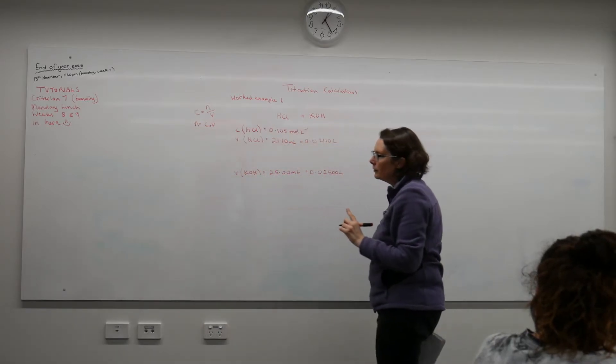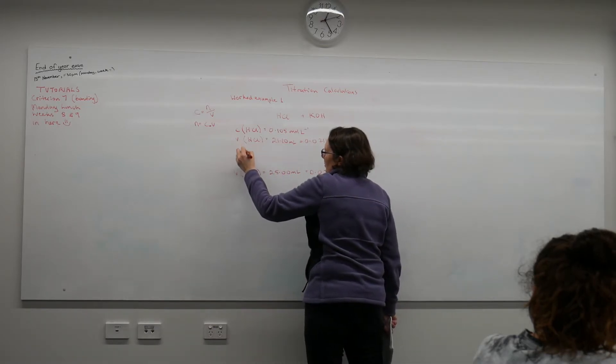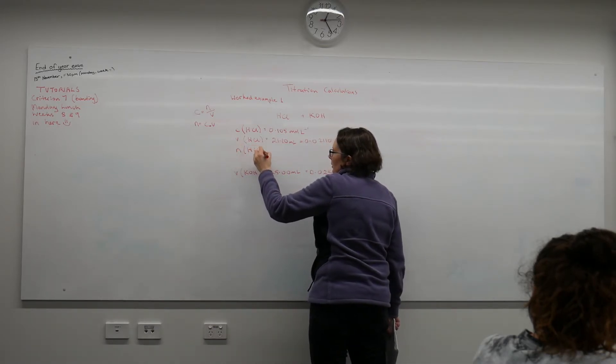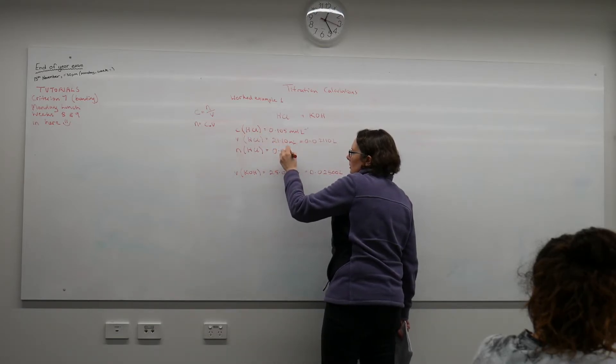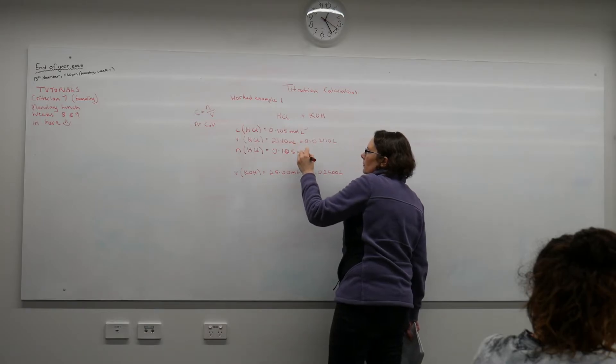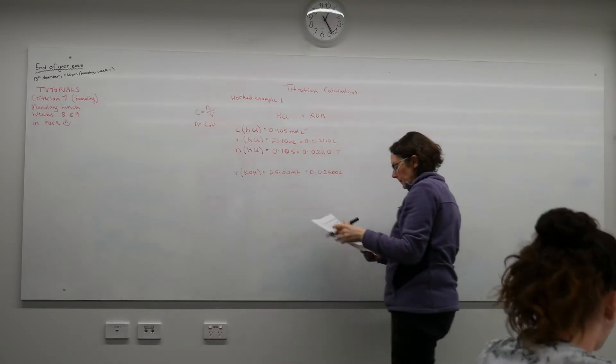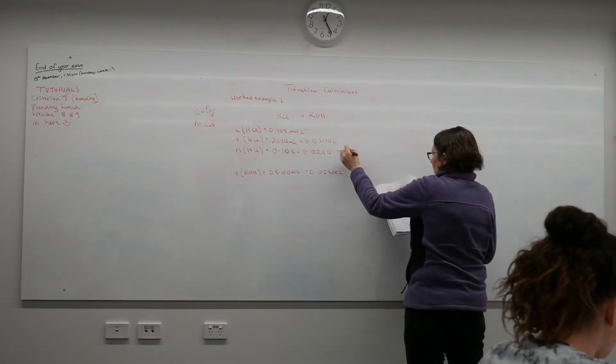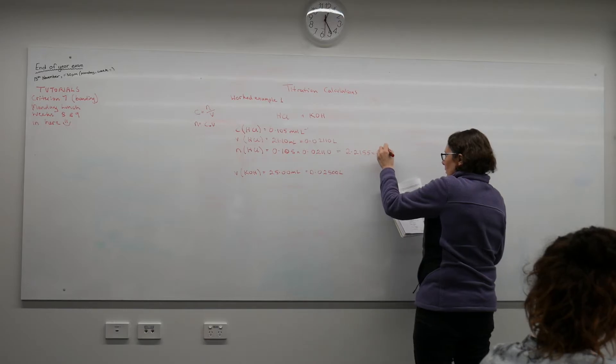So I have enough information to work out my moles of acid. Moles of hydrochloric acid will equal the concentration multiplied by the volume in litres, and we end up with 2.2155 times 10 to the minus 3 moles.